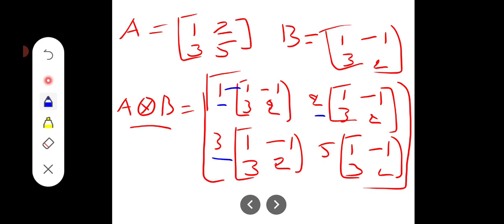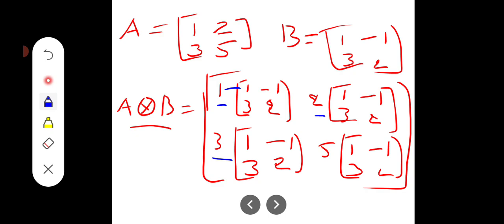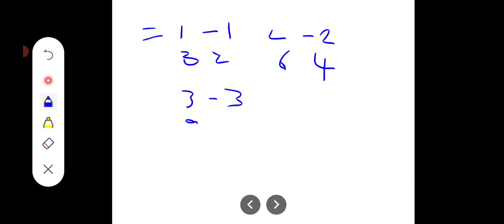This is 3 into [1, -1; 3, 2]. So 3 times 3 is 9, 3 times 2 is 6, giving [3, -3; 9, 6].